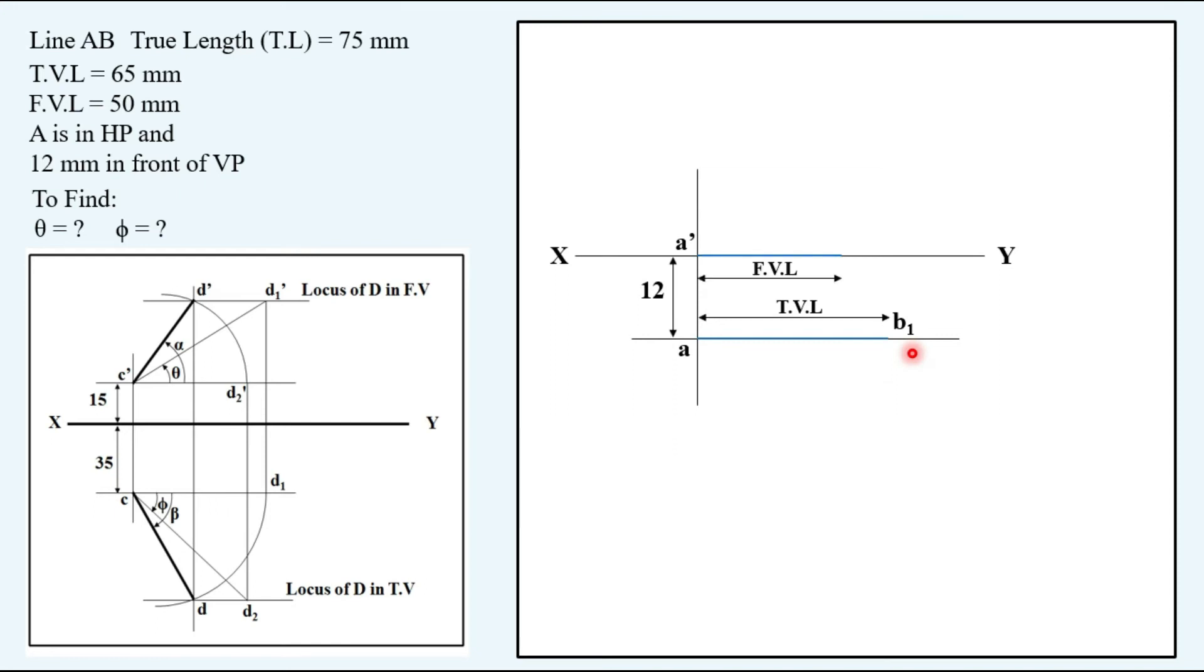Then the front view length corresponding point will be B2 dash. Now you have to draw a vertical projector from this point vertically upwards, so like this here and drop projector from this B2 dash downwards.